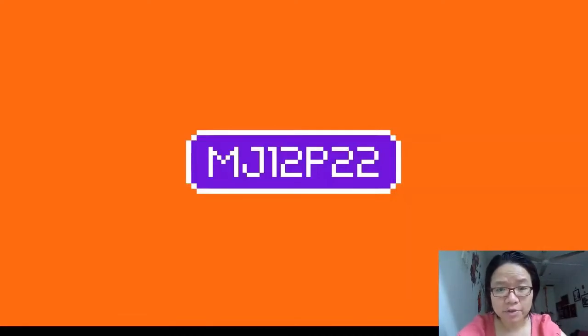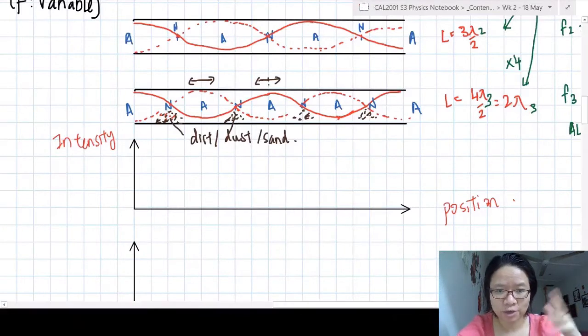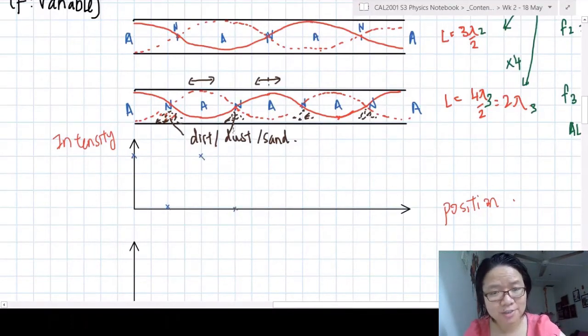This is the example video for Lecture 3, Stationary Wave in Air Column. As usual, you can find the question beforehand. But before we start, I want to sketch out the graph of intensity, which is once again energy per unit area, against position.